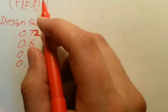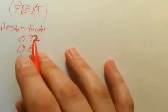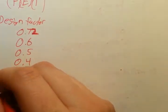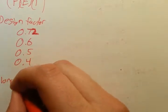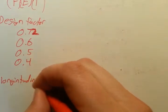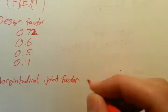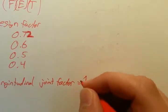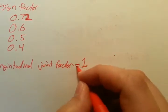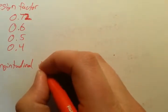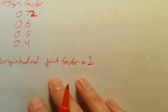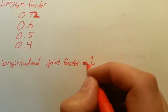The second one, E, is the longitudinal joint factor, which I'd say 90% of the time is just one. We don't even use it, but it's important to remember when you're running calculations for older pipelines.